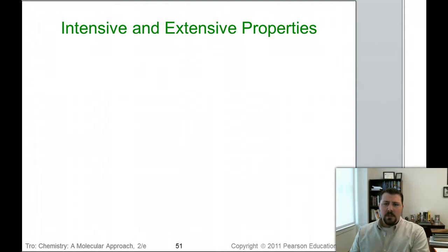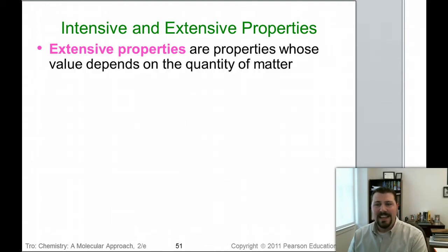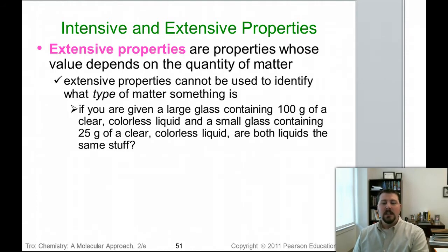Sometimes it's useful to have units that are not dependent upon how much material is present. This leads us to a discussion of intensive and extensive properties. Think of extensive properties as properties that depend on the extent of the system. Is there a large extent of material? Then you're dealing with an extensive property. Your property depends ultimately upon the quantity of matter that you have present or upon the extent of matter that you have.